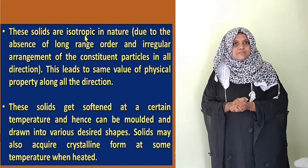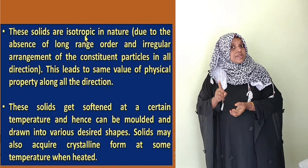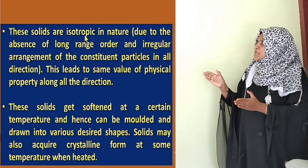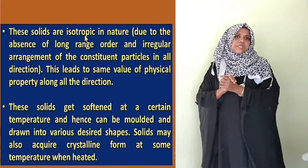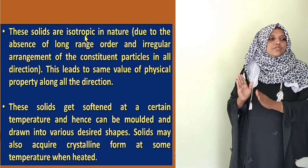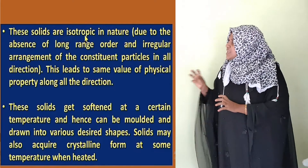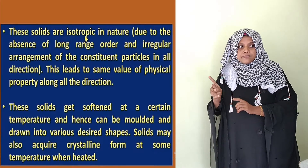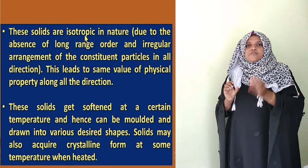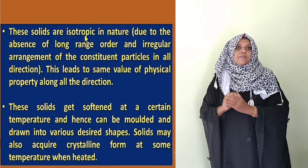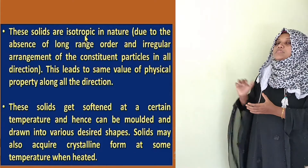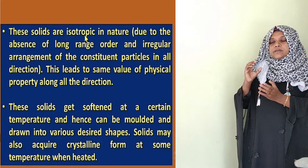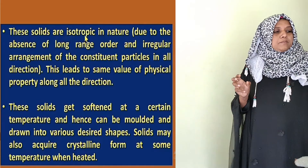Amorphous solids have the same physical properties in all directions, which is called isotropic. Unlike crystalline solids which are anisotropic, amorphous solids are isotropic.